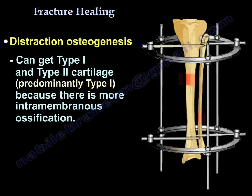In distraction osteogenesis, you can get type 1 and type 2 collagen, but predominantly type 1 because there is more intramembranous ossification.